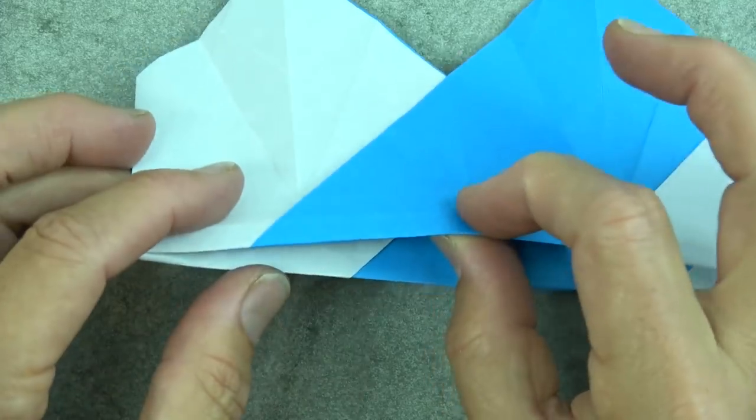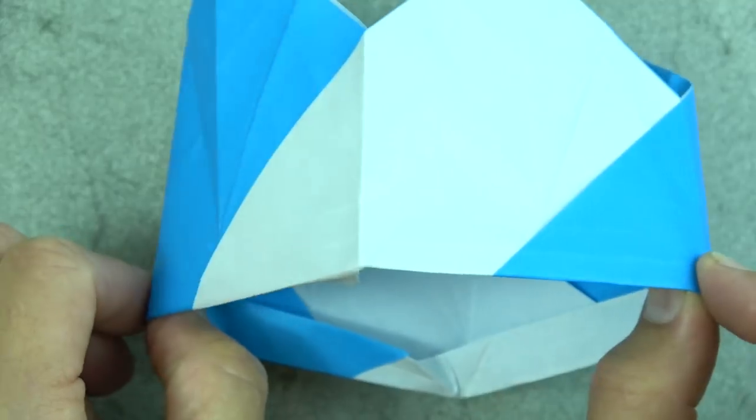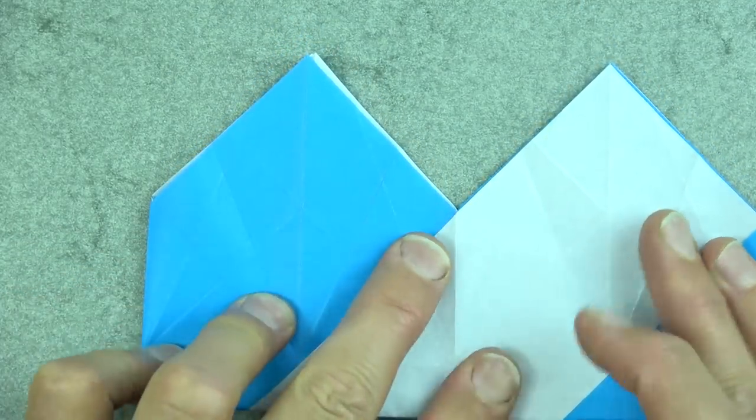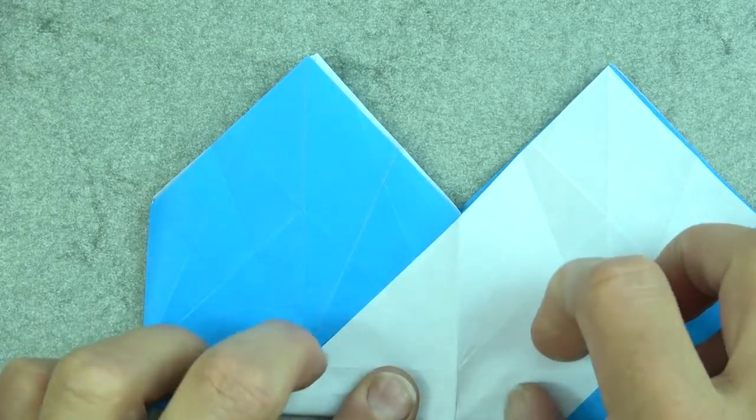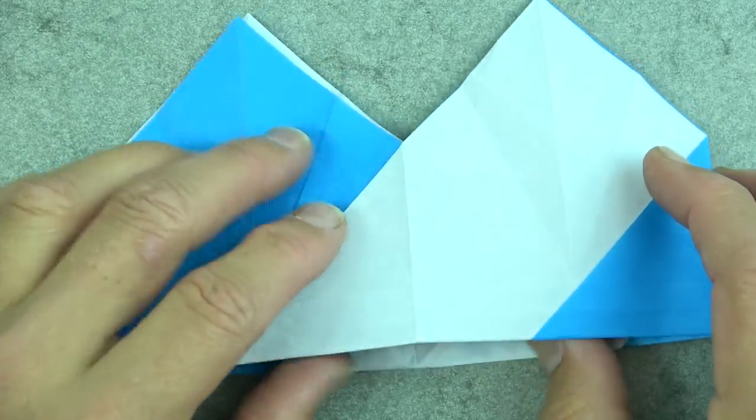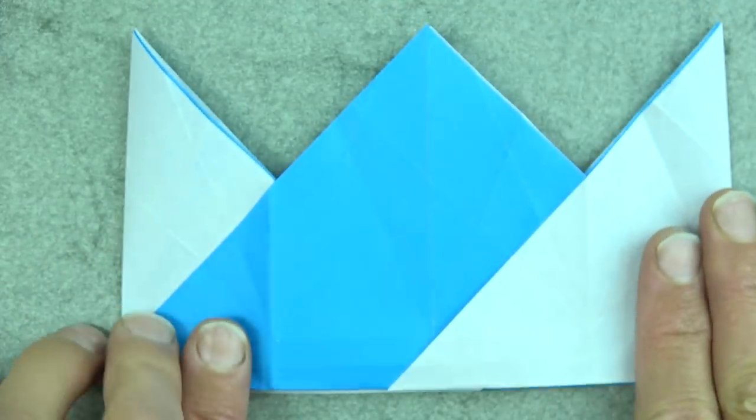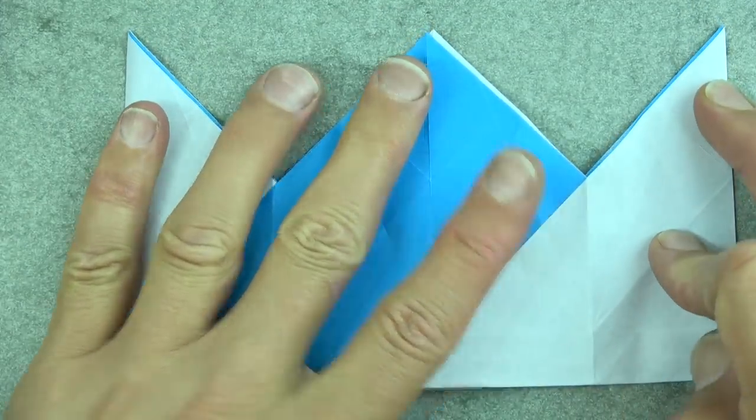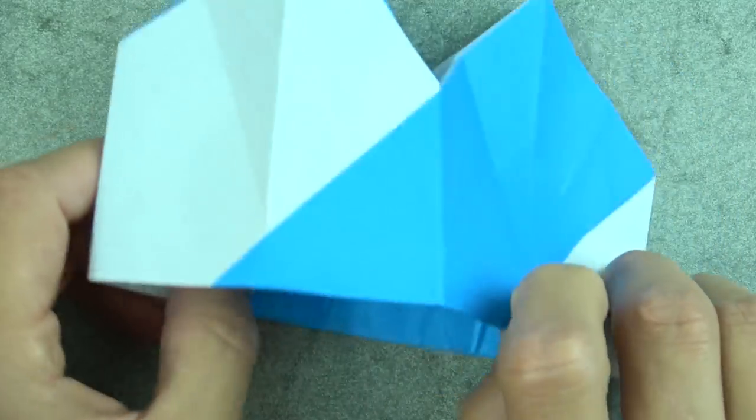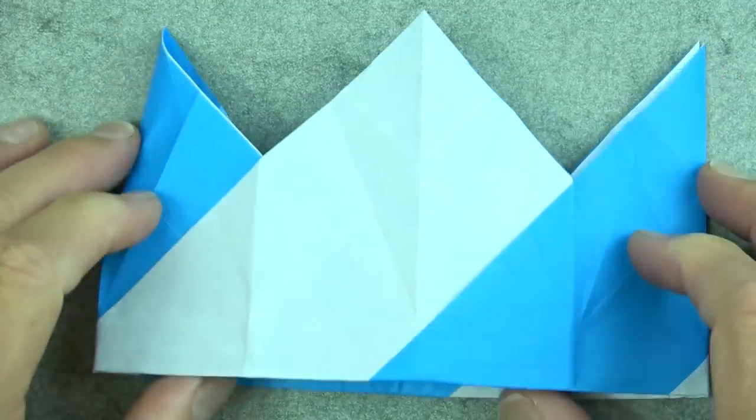Now hold this point and this point and separate them so that it flattens like this. And now move it so that it flattens like this. And move it again. And again.